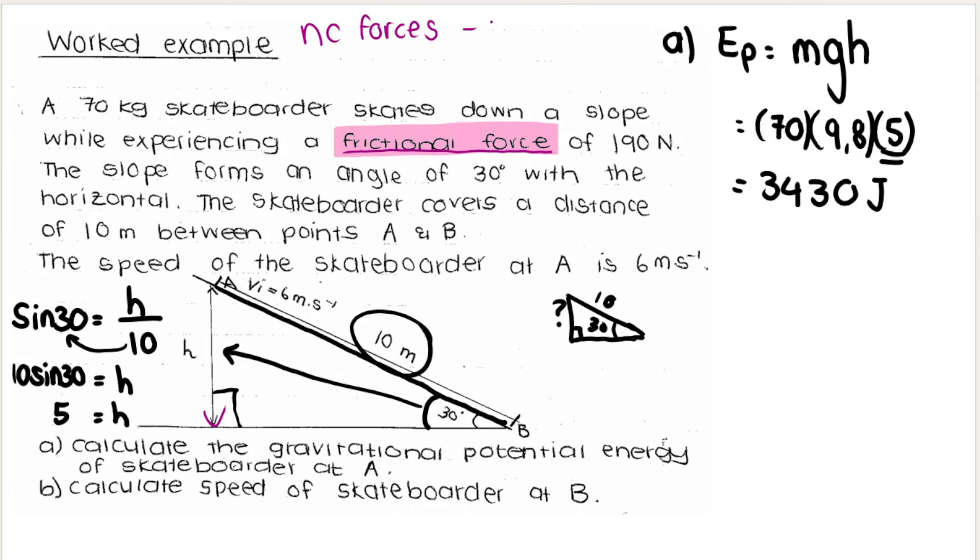So remember, our non-conservative forces, the ones that we listed in the previous videos, were friction. We do have friction. If applied, and we have tension. Those are three. In my scenario, yes, I have friction. Do I have an applied force? So there's a skateboarder sliding down the slope. Is there a force that is being applied to the skateboarder? No, there is no force being applied to the skateboarder. So nope, there's no applied force.